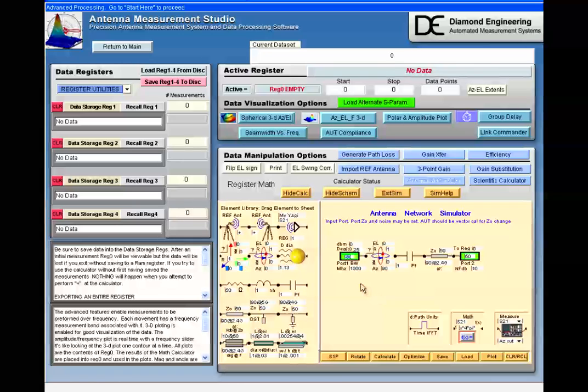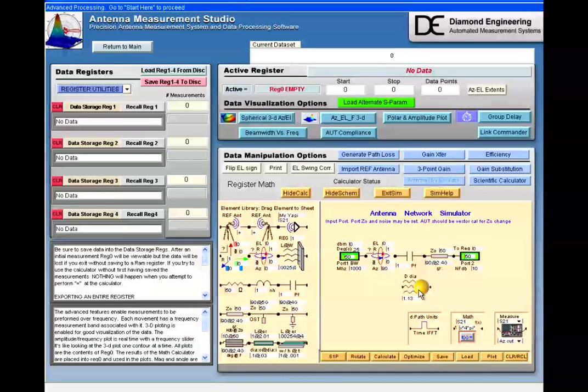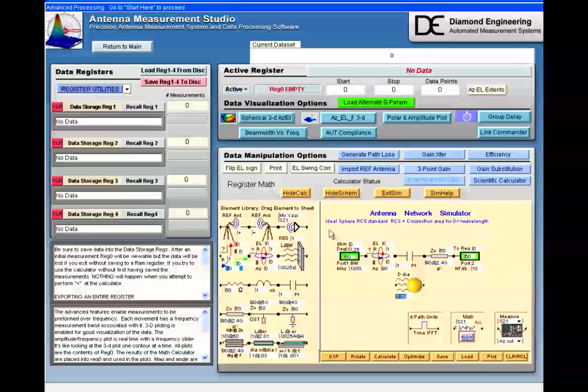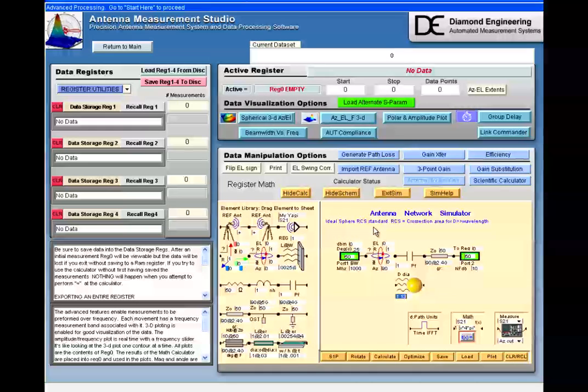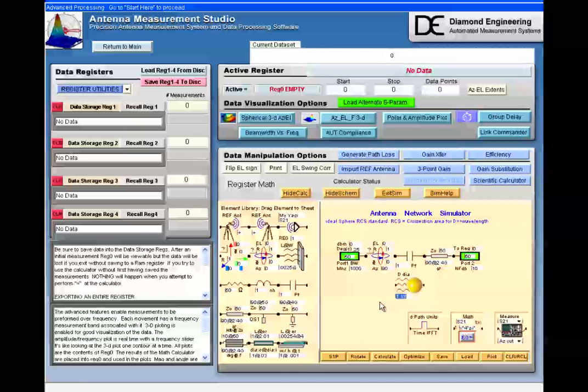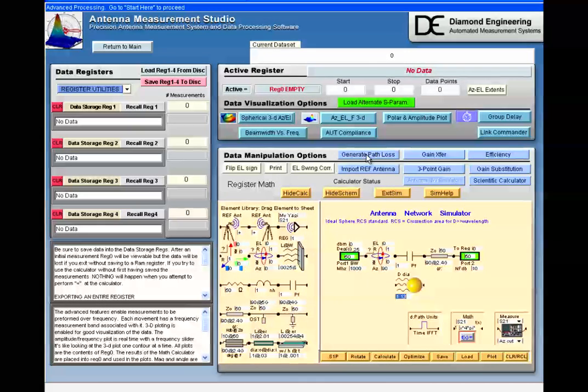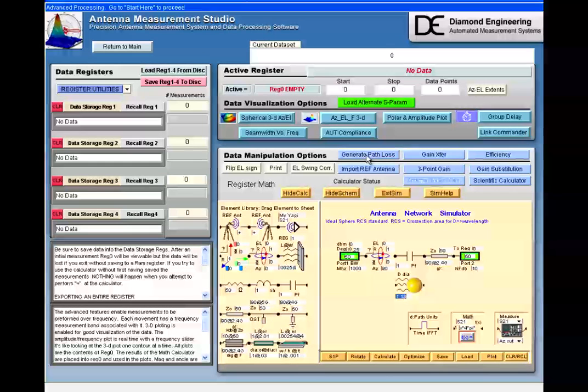Some of the elements are distributed and some are special function. All the elements have help files which display the nature of the element when it's dragged. This is the ideal sphere for RCS standard for a given diameter. All the dimensions in the simulator are those units signified in the Path Loss module.